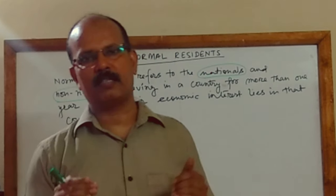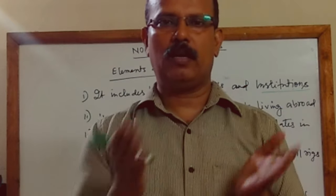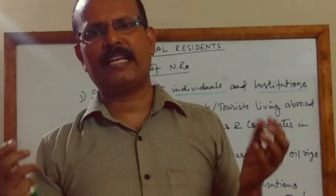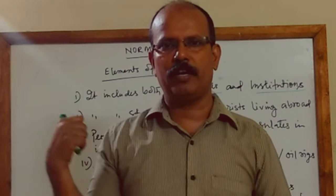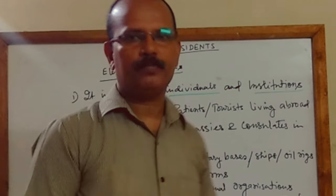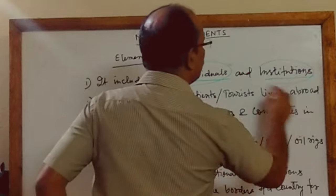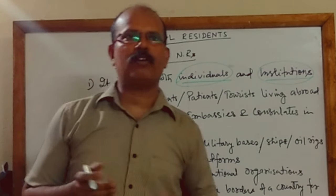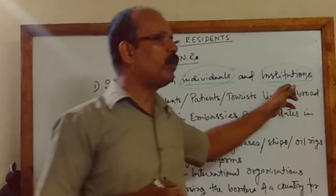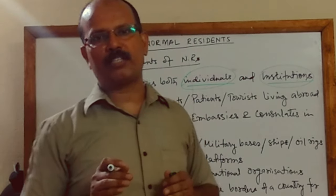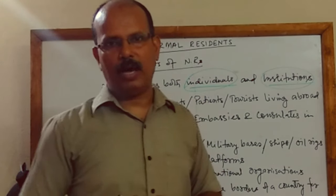Now I am going to explain the elements of normal residence. If we know these elements we will get a clear understanding of who are normal residents of a country. Normal residence includes both individuals and institutions. Individuals refers to factor owners — owners of land, labor, capital, and entrepreneur — that is all households. Institutions refers to firms or production centers.